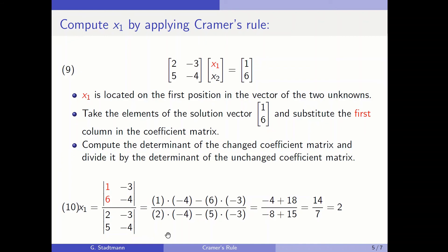The determinant is computed as follows: take the product of the main diagonal and subtract the product of the side diagonal. The product of the main diagonal is 1 times minus 4, and then subtract the product of the side diagonal: minus 6 times minus 3. The same in the denominator: 2 times minus 4, minus 5 times minus 3. So we get minus 4 plus 18 in the numerator, and minus 8 plus 15 in the denominator. Therefore x1 is equal to 14 over 7, so x1 equals 2.